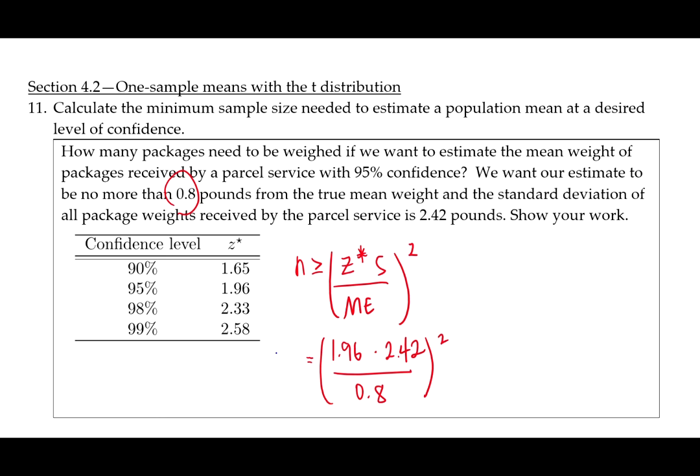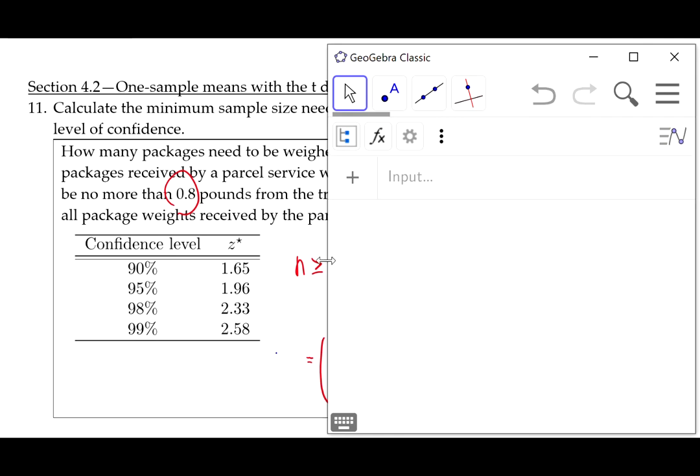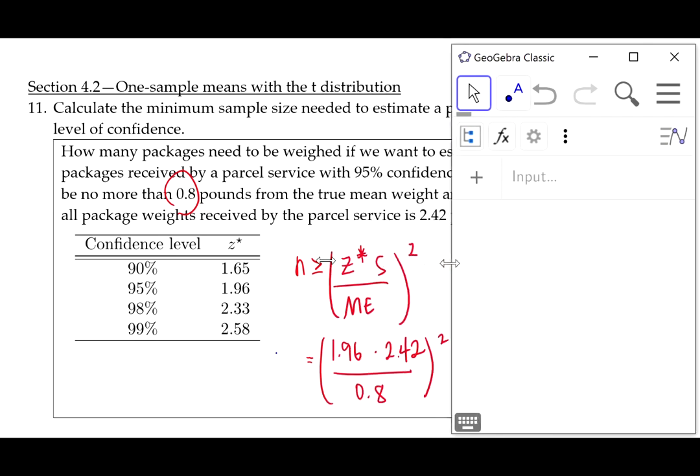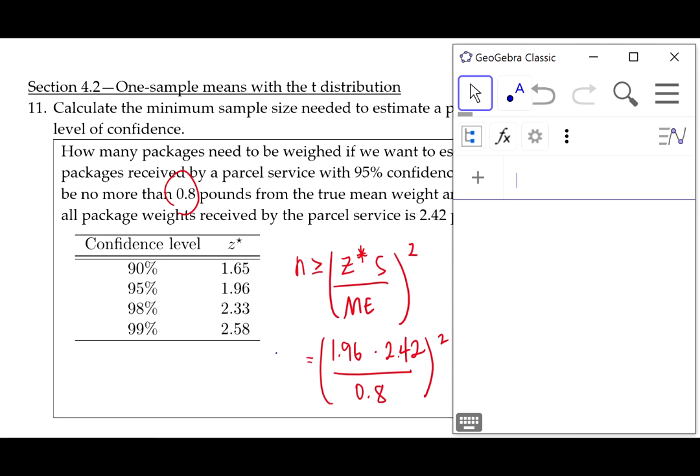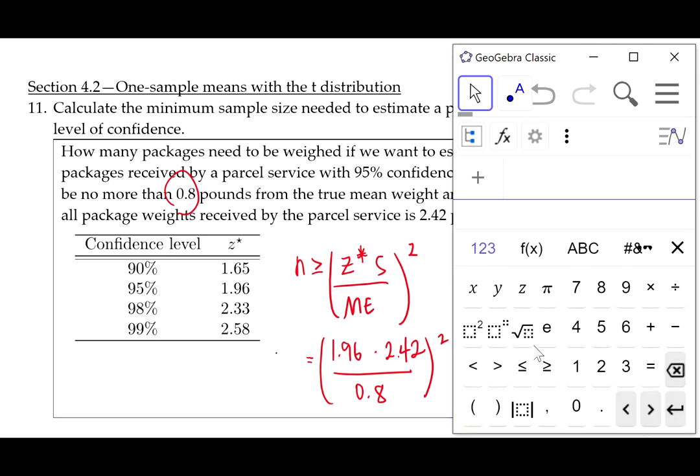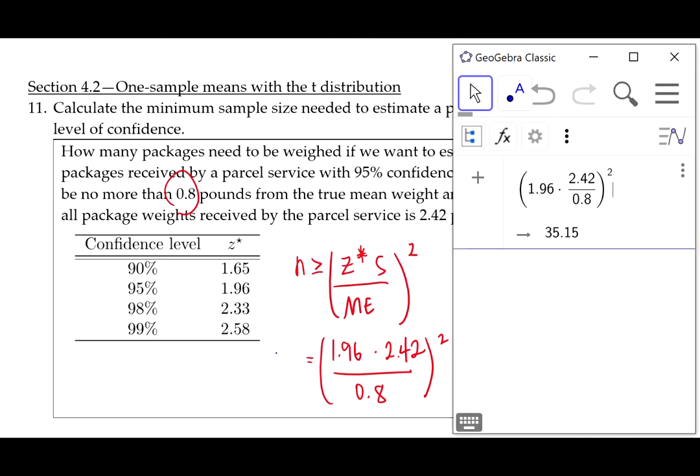So we can do this calculation in GeoGebra. We need to do 1.96 times 2.42 divided by 0.8. And then I'm going to come out here and we need to square this whole thing. And we get 35.15.